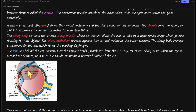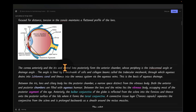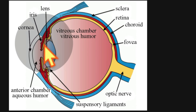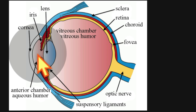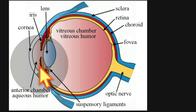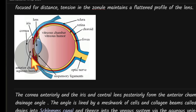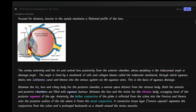The ciliary epithelium makes the aqueous humor, which maintains intraocular pressure. The ciliary body also provides attachment for the iris, forming the pupillary diaphragm. The anterior chamber is formed between the cornea anteriorly and the iris and lens posteriorly. Its periphery, the iridocorneal angle, is lined by the trabecular meshwork through which aqueous drains into Schlemm's canal and then into the venous system via aqueous veins.